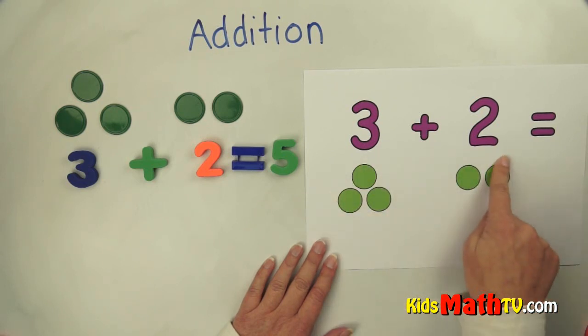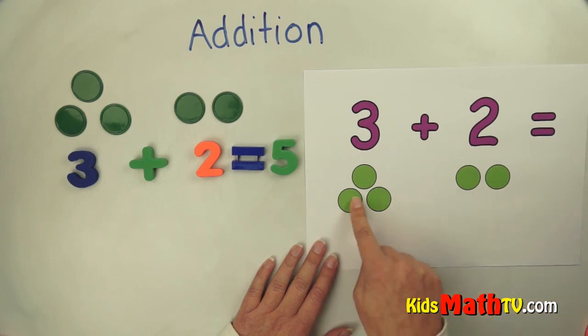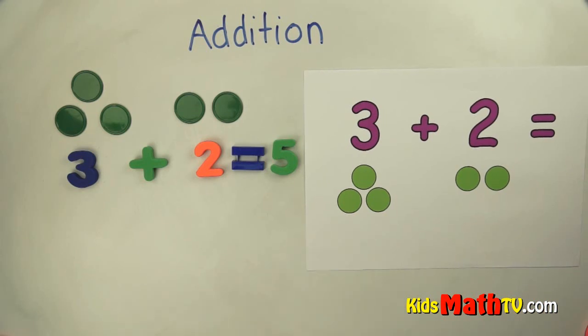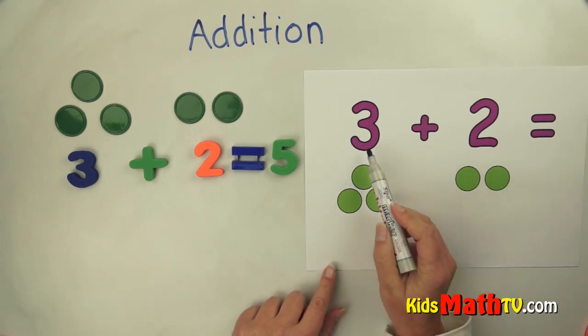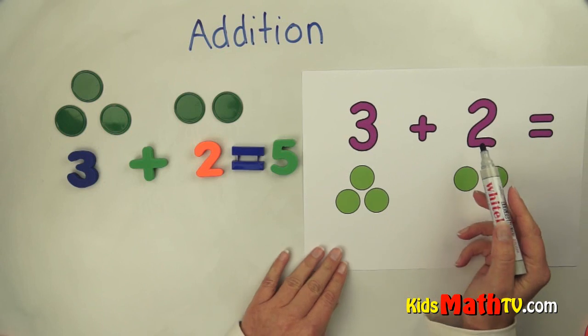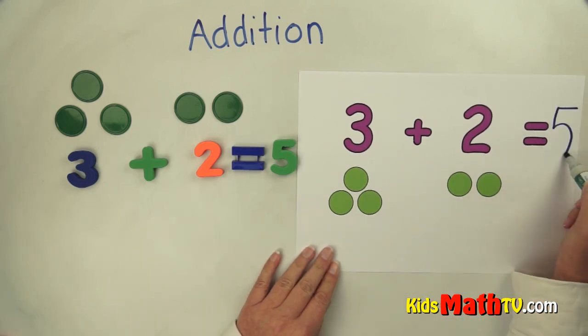All together, how many circles are there? One, two, three, four, five. There are five circles. So the answer to three plus two is five.